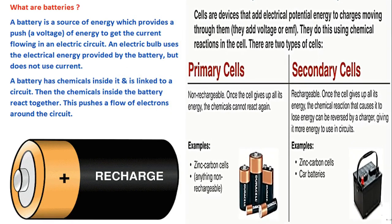Now I am going to tell you about two types of batteries. Batteries are commonly called cells as well. Cells are devices that add electrical potential energy to the charges moving through them, using chemical reactions. There are two types of cells: primary and secondary — or you can commonly call them rechargeable and non-rechargeable cells.